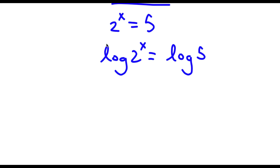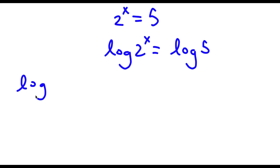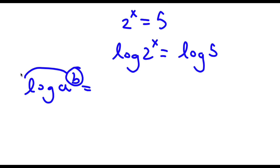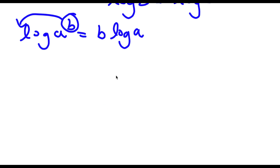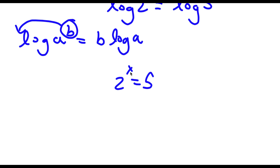Now, an important property of logarithms is that if I have something in the form log a to the power of b, I can actually move this exponent b to the front of the logarithm. So this is going to equal b times log a. And this property is actually so important because, as you can see, right now we have 2 to the power of x is equal to 5. And x here is an exponent, and it's going to be really hard to find the value of x without it being a normal term because x is actually going to be a decimal.